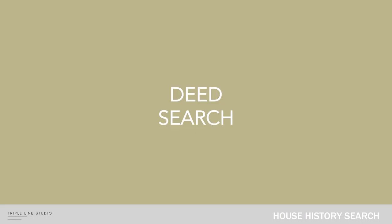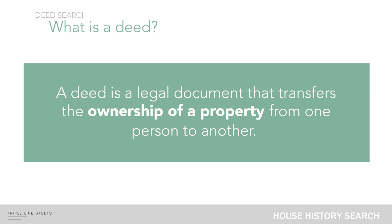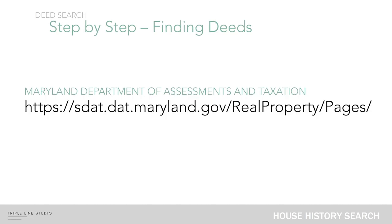The third way to uncover your house's history is through a deed search. A deed is a legal document that transfers the ownership of a property from one person to another. Here is a step-by-step tutorial on how to do a deed search. However, this is really more geared towards the state of Maryland, so your state might have something similar. If it doesn't, you might want to do some research to see what the process might be for your state.